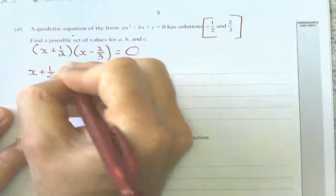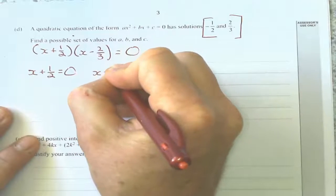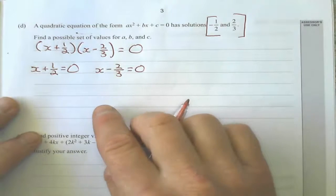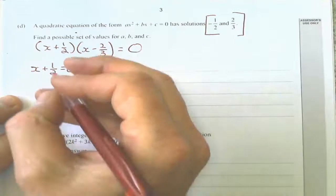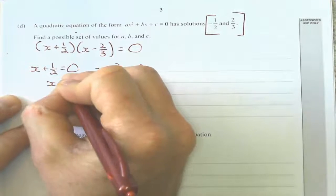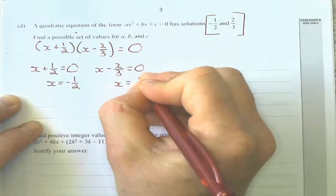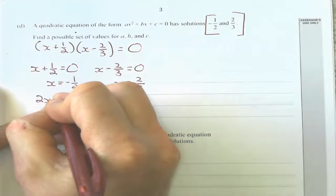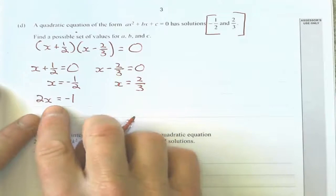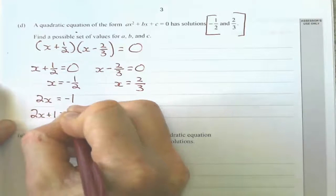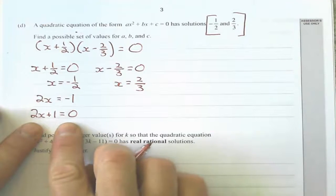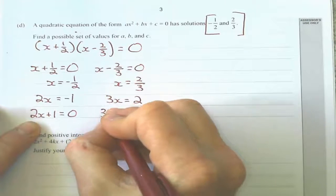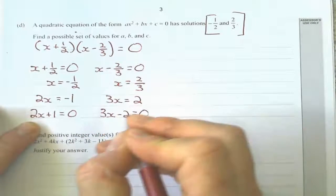In this form I want to eliminate fractions. I take that half to the other side and get x equals negative one half, and that to the other side to get x equals positive two thirds. Now I multiply the other side by two, so I get 2x equals negative one, then rearrange to get 2x plus one equals zero — no fractions. I do the same for the other: multiply by three to get 3x equals two, subtract two to get 3x minus two equals zero.